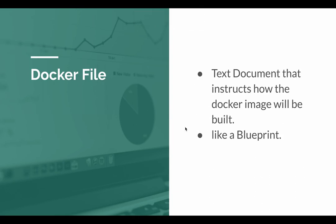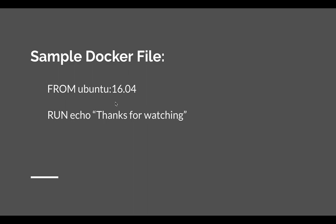The first component of Docker is the Dockerfile. A Dockerfile is just like a blueprint — it is a text document that instructs how Docker images will be built. I will show you how to create a Dockerfile in this video. This is how a Dockerfile looks like. First you select a base image using the FROM keyword — here I am using Ubuntu as my base image. Then you can run commands such as downloading, installing, or running any software. Here I am just echoing a 'thanks for watching' text.